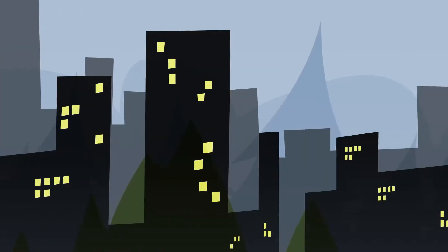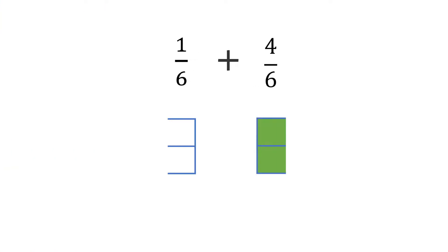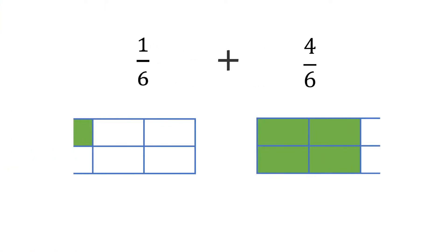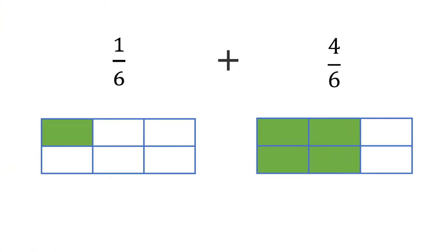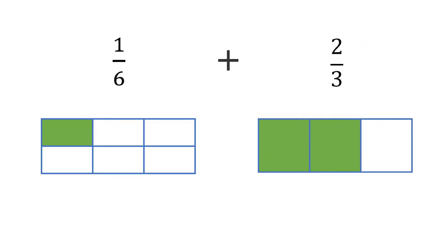Because a fraction represents equally sized pieces of a whole, we must use the same size parts when we add and subtract them. We can combine the fractions 1/6 and 4/6. Even though 4/6 and 2/3 are equivalent fractions,